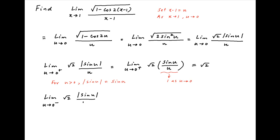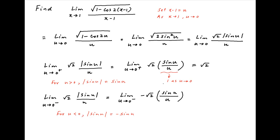Again evaluating the limit as u tends to 0 from the negative side: limit u tending to 0 from the negative side of root 2 modulus of sine u upon u. Now when u is negative, sine u is negative, and therefore modulus of sine u is equal to minus sine u. Therefore this limit is equal to limit u tending to 0 from the negative side of minus root 2 times sine u upon u. Since sine u upon u again tends to 1 as u tends to 0,